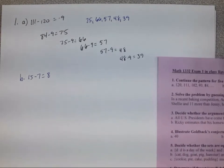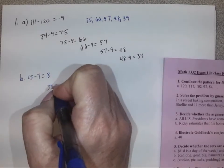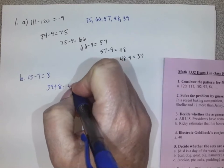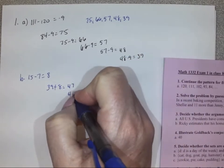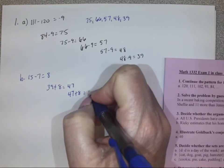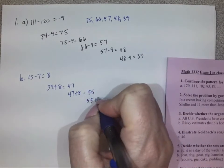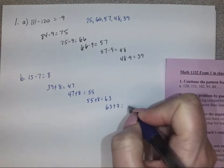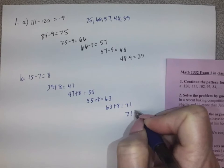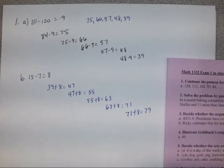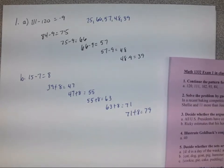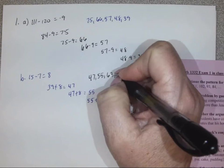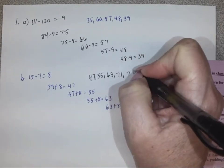Now we find the next five terms. 39 plus 8 gives us 47, 47 plus 8 gives us 55, 55 plus 8 gives us 63, 63 plus 8 gives us 71, and 71 plus 8 gives us 79. So our five terms are 47, 55, 63, 71, and 79.